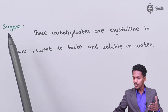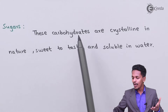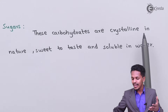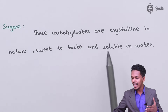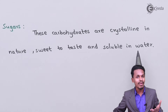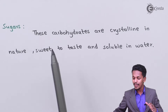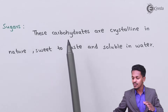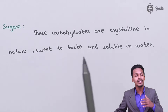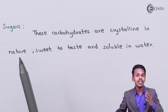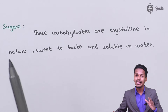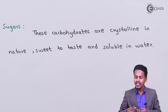So what is sugar? Sugar means these carbohydrates are crystalline in nature, sweet to taste, and are soluble in water. So those carbohydrates which are soluble in water, which have a crystalline structure, and which are sweet in nature, are called sugars.